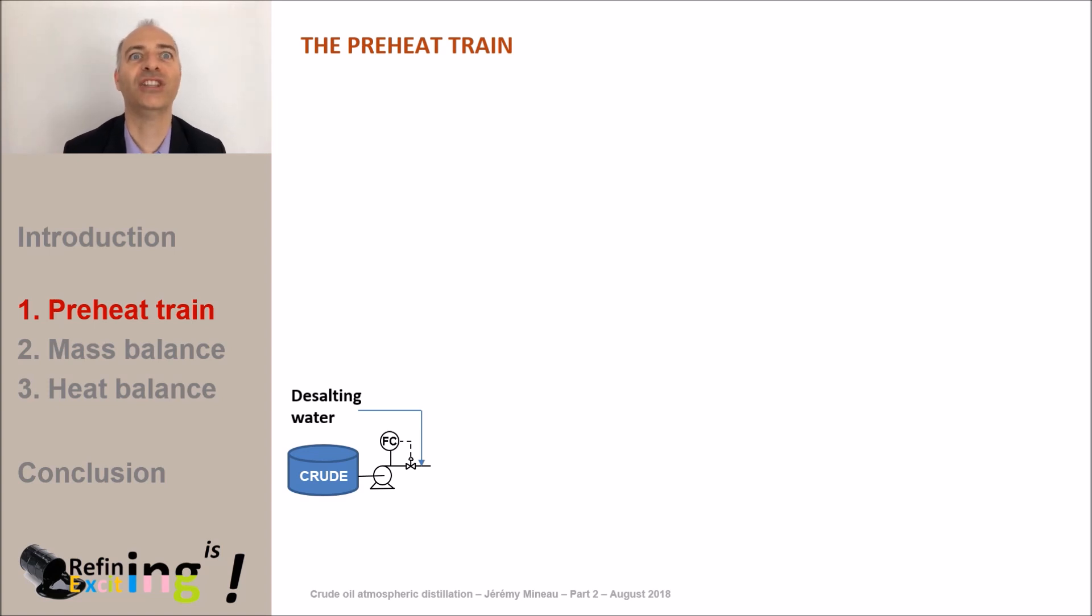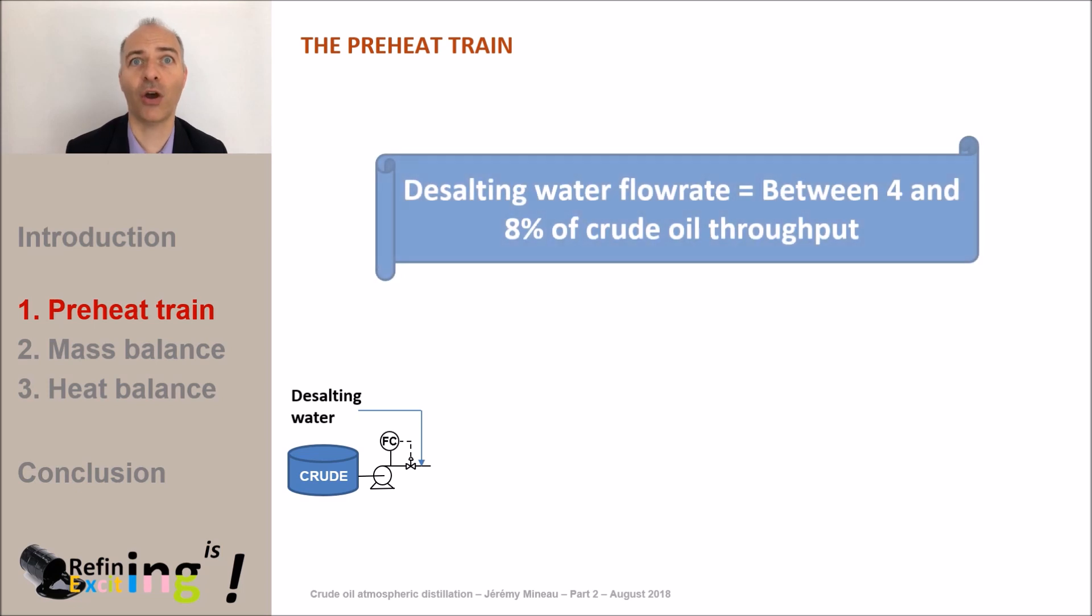The amount of water that is injected is about 5% of the crude throughput. But it should be known that this amount can vary between 4 and 8% depending on the crude characteristics. In our case the amount of desalting water will be about 25 tons per hour.